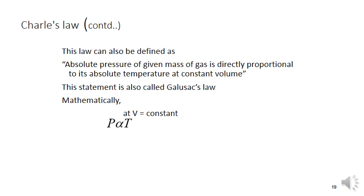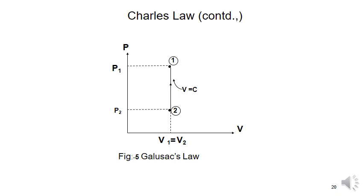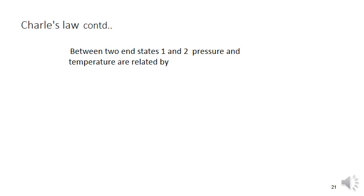This form of Charles' law at constant volume is also called Gay-Lussac's law. Mathematically, V = constant and P is directly proportional to T, so P/T = constant. As pressure increases, temperature also increases, and vice versa. The graph at constant volume is parallel to the y-axis. Between two states, the relation is P1/T1 = P2/T2.